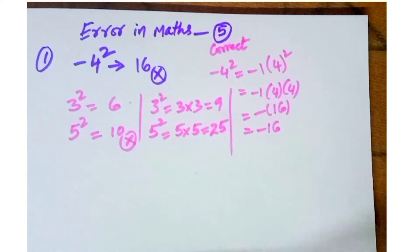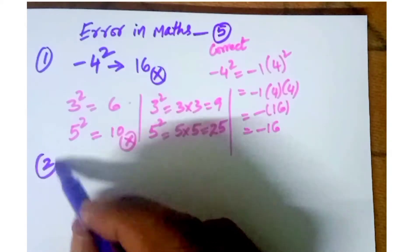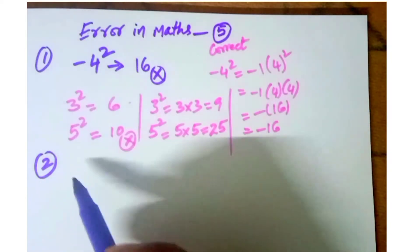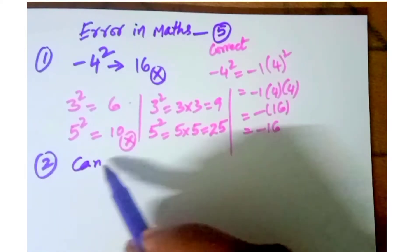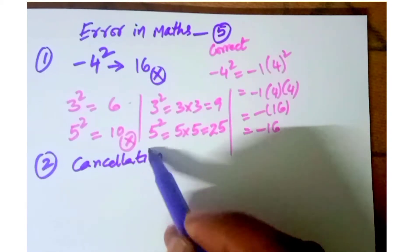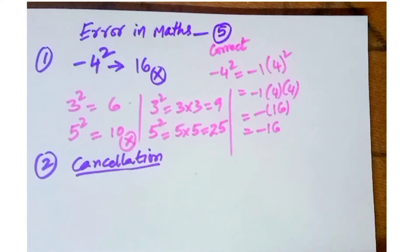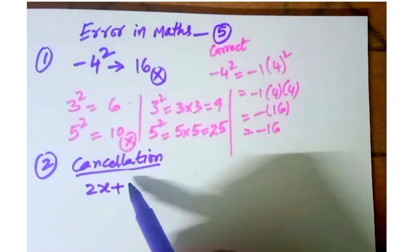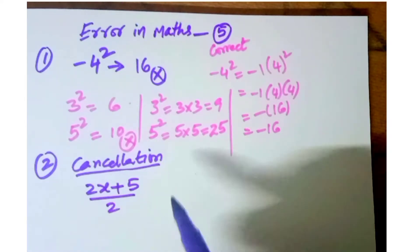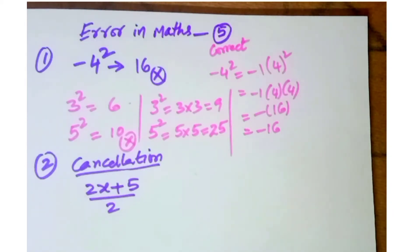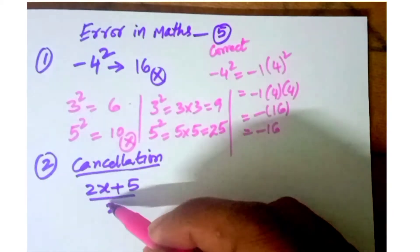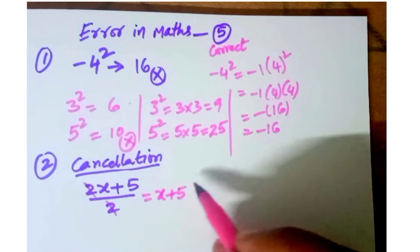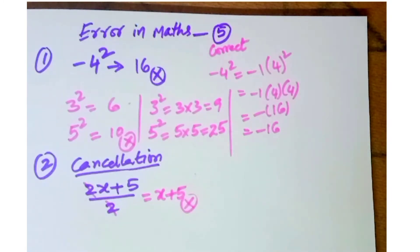That is the first error in mathematics. The second error is cancellation of terms. Students make mistakes in cancellation. For example, with two x plus five divided by two, they cancel the two and write x plus five — that is wrong.